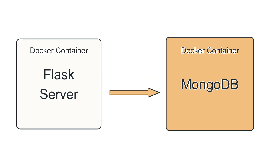The solution is to create two Docker containers: one with MongoDB running and another with the Flask application running. For that, we will use Docker Compose and create a docker-compose.yaml file.